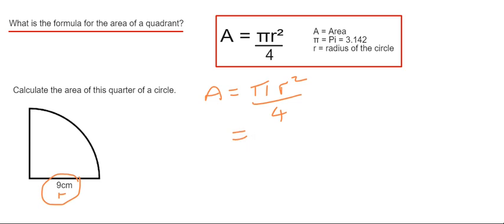So if we just substitute our numbers into our formula, pi is 3.142 or you can use your calculator button.